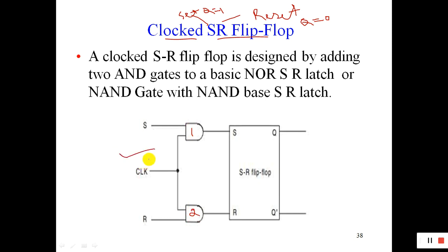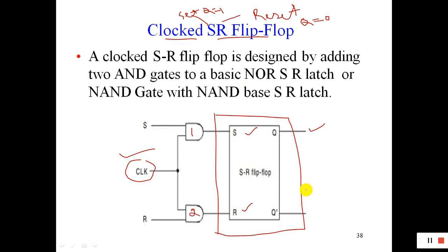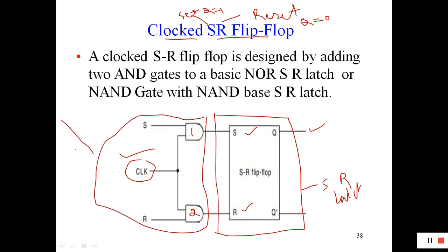This is the clock input. The SR latch portion may be a NOR SR latch or NAND SR latch. We have two outputs which are opposite or inverted to each other. Let's find out how this works. The SR latch is here, and we are adding the clock to this portion.